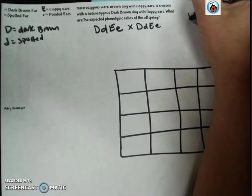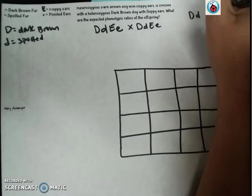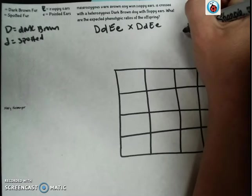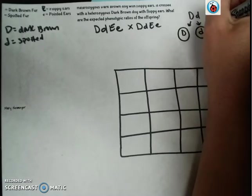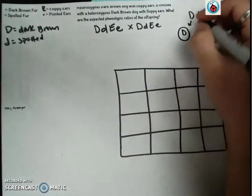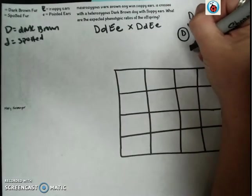When we look at how alleles separate or segregate during Mendel's law of segregation, half of the alleles are going to end up with a capital D and half will end up with a lowercase d. And the same thing is true for the floppy ears.